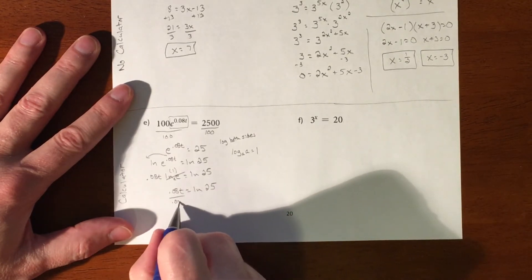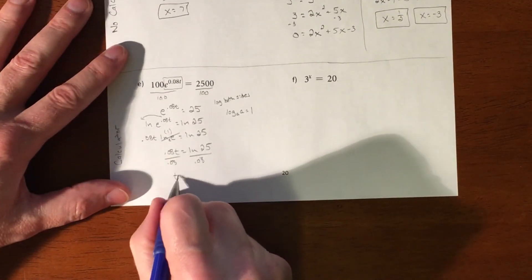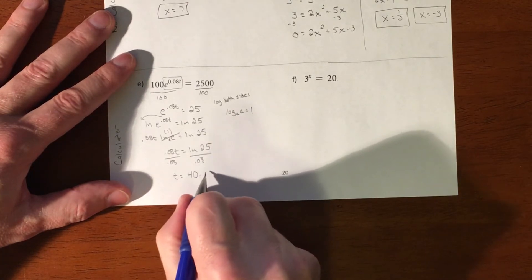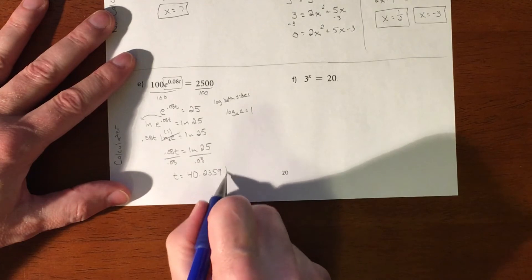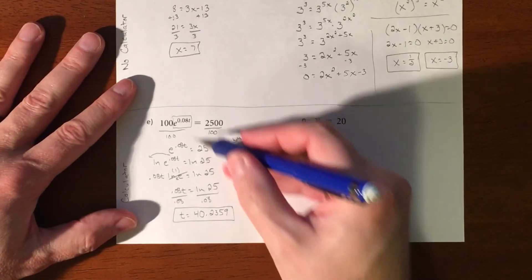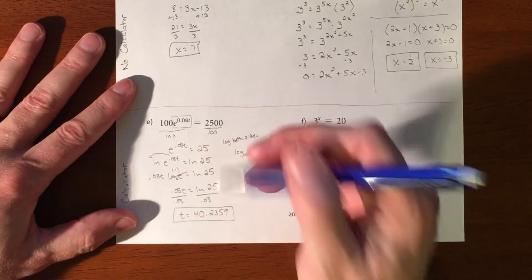Divide by 0.08. T is going to equal, and we're going to take this out to four decimal places, 40.2359. And then I would definitely double check that. I would be plugging this back in, making sure that 100 times that is all going to make 2,500.